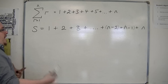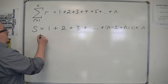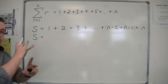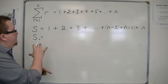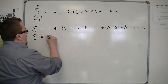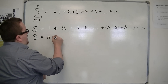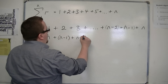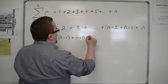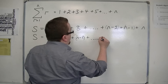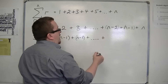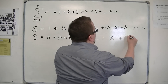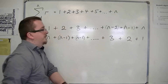If I rewrite this in reverse order, then I would have n plus n minus 1 plus n minus 2 plus dot dot dot plus 3 plus 2 plus 1.